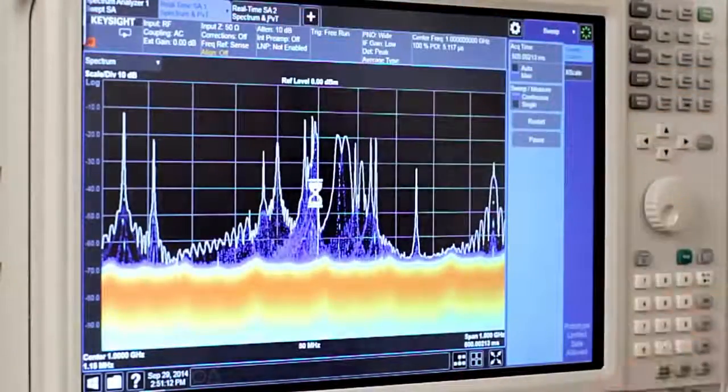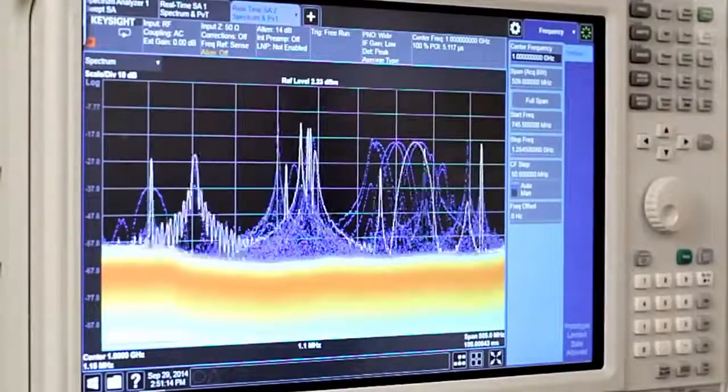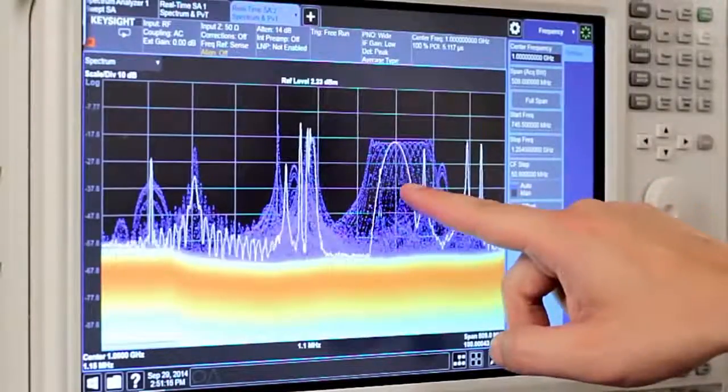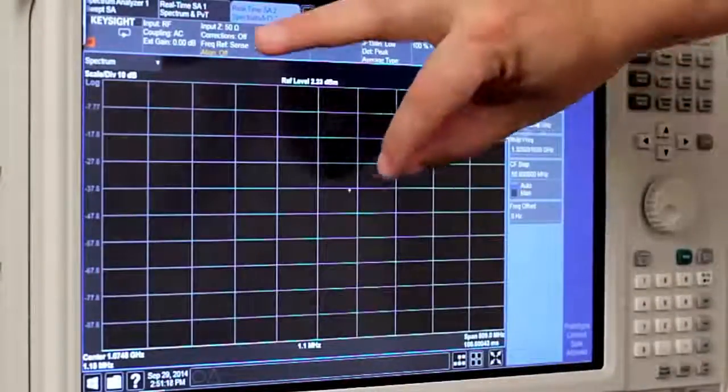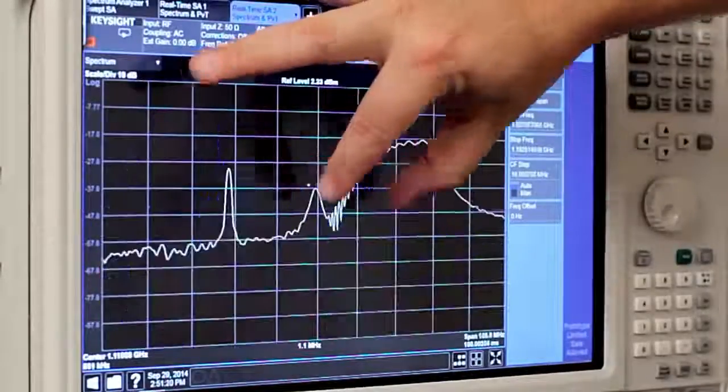Let's use the density display to review the spectral environment. I'm going to focus in on the chirp here. As you can see, there are multiple pulses in this frequency range.